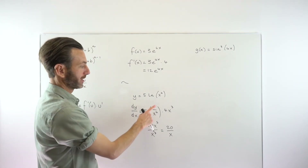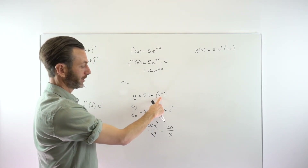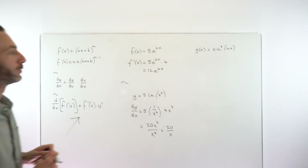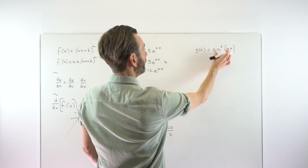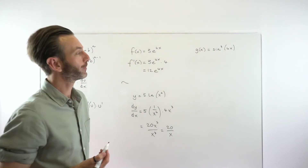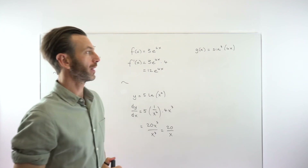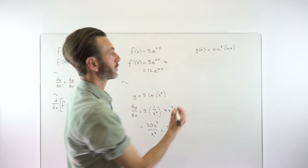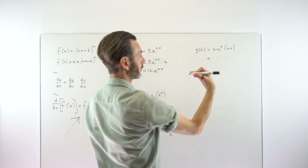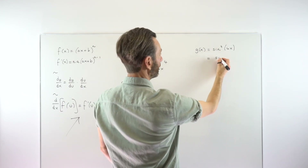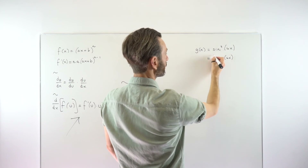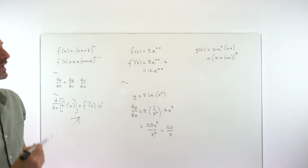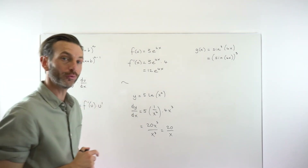Basically a log derivative manifests as the derivative of the function over the function. Now let's look at a trigonometric example — a little more complicated. If you've got a sine or cosine to a power, you might want to rewrite it in a more intuitive form. The cubed power really means sine(4x) all cubed, so I'm going to put that in a second bracket, which makes it easier to see what your internal and external functions are.